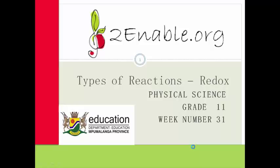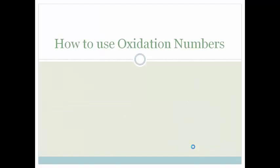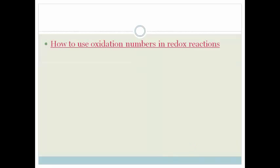Good day Great Elements, welcome to this last lesson in week 31. In this week we have learnt what redox reactions are, that they are made up of oxidation and reduction half reactions and together they make up a full redox reaction. We have learnt about oxidation numbers and how to assign them. Now in this lesson we are going to learn how to use oxidation numbers in redox reactions.